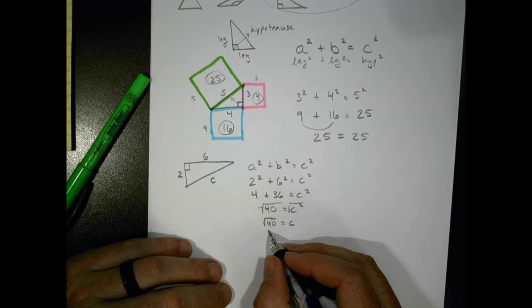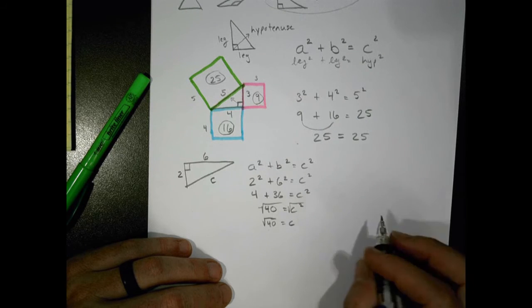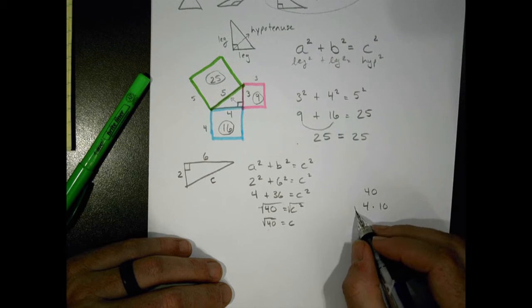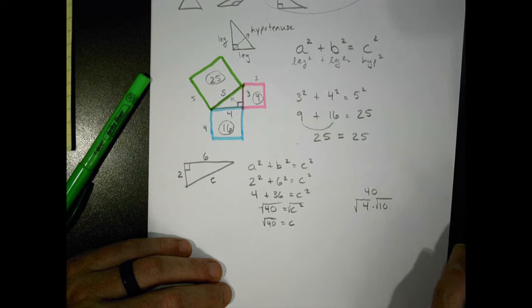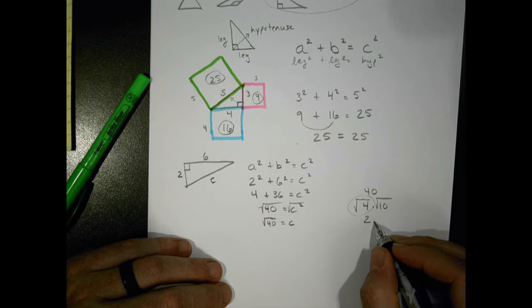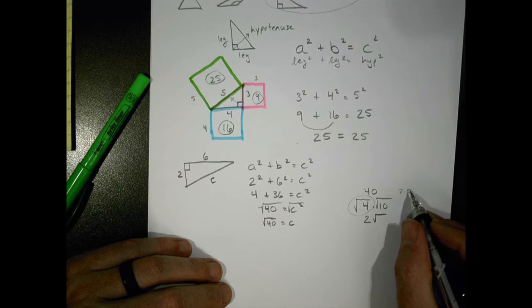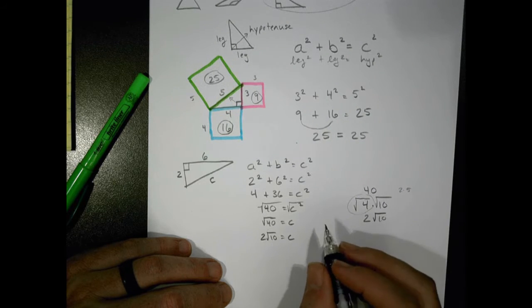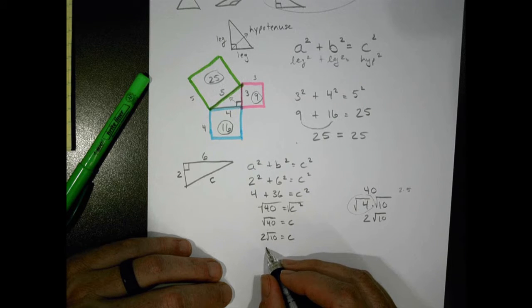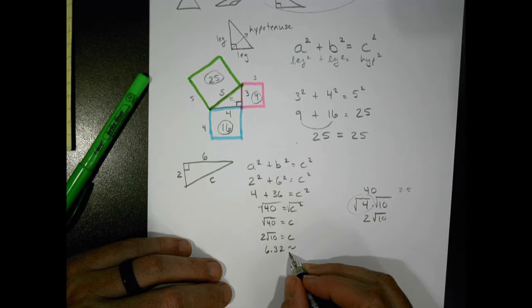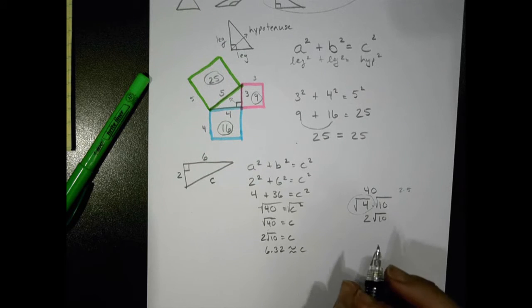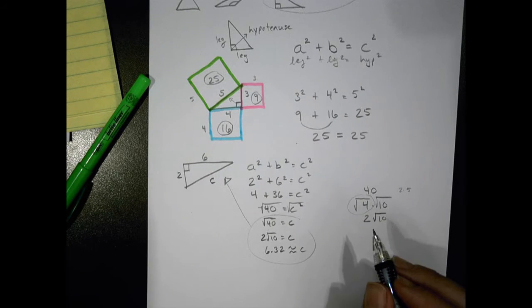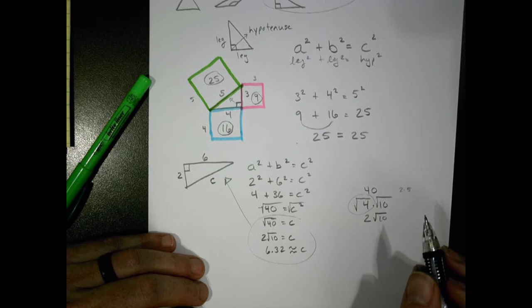If you wanted to break that apart further: 40 is four times 10, so it's like the square root of four times the square root of 10. The square root of four is two, and 10 factors into two times five, which aren't perfect square numbers. So you could write this as two root 10 equals c, or use a calculator — the square root of 40 is about 6.32.